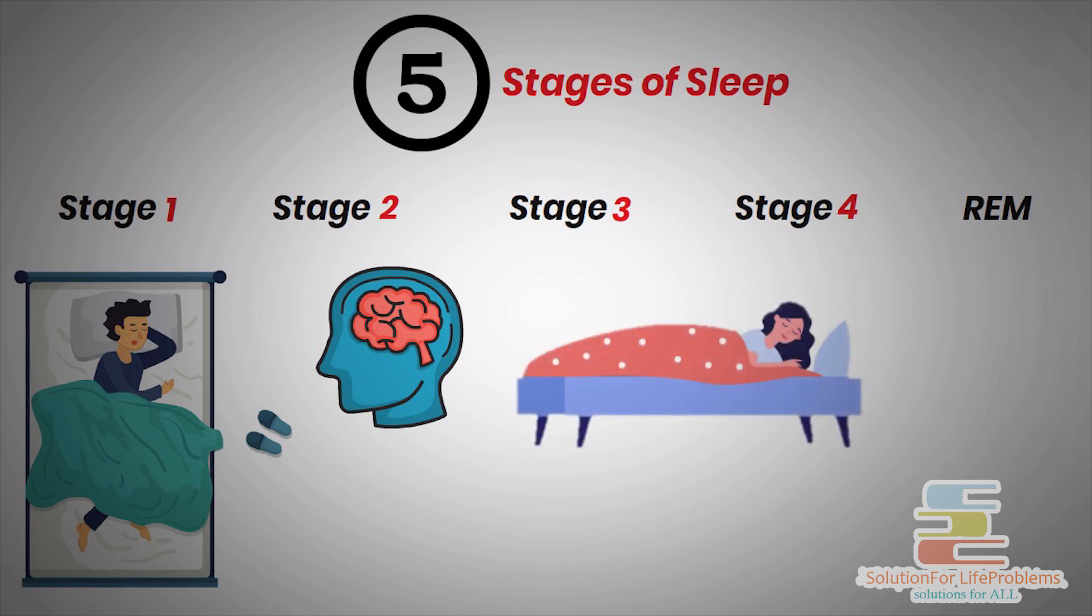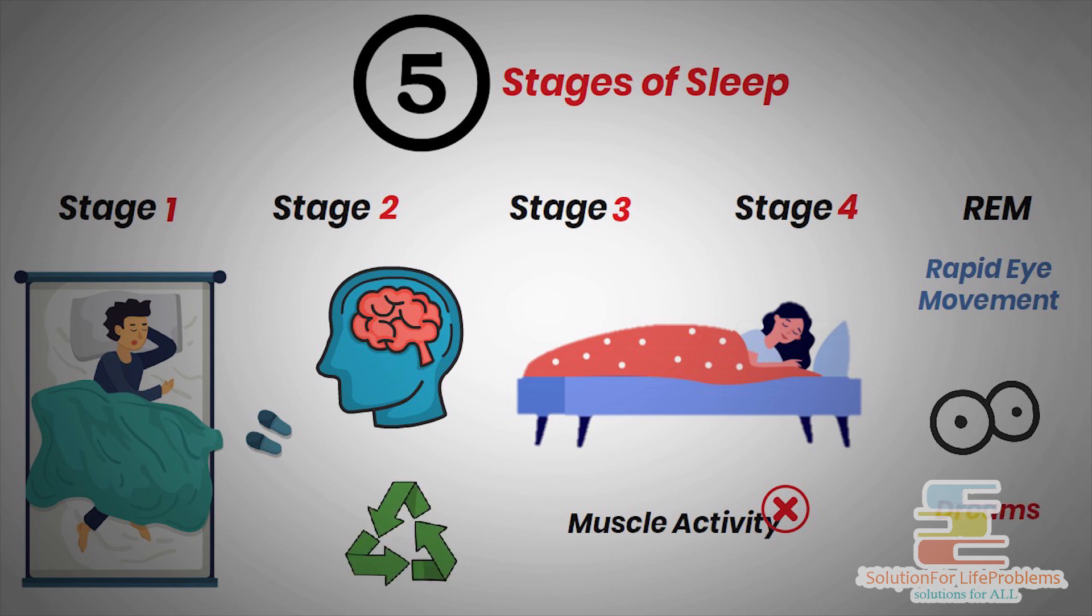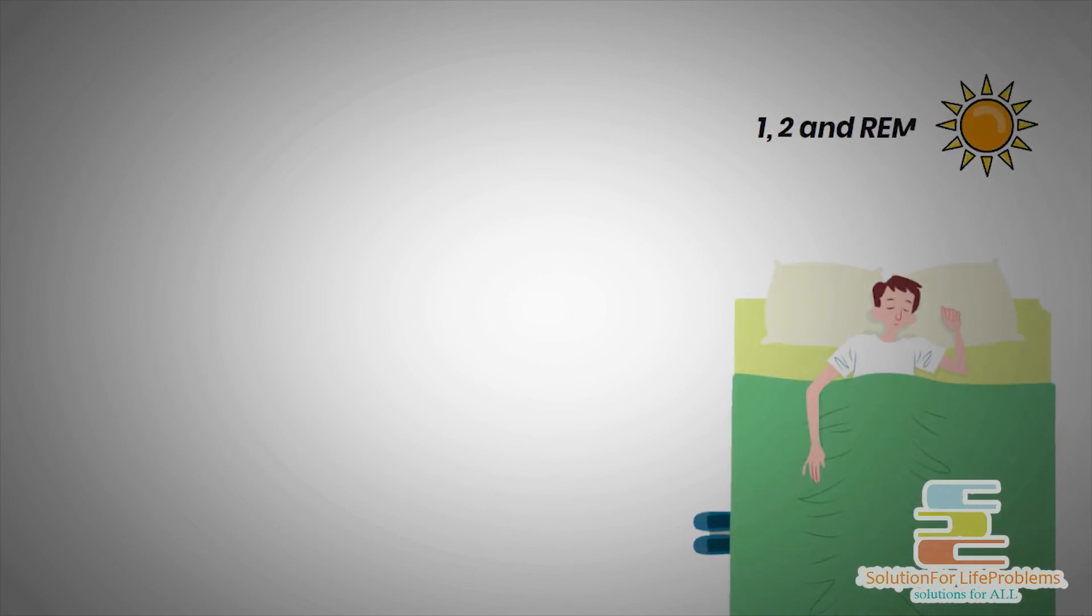Stage 3 and 4 are deep sleep as there is no muscle activity. Rapid eye movement or REM stage is where rapid eye movements take place and we have dreams. The cycle repeats and by morning, people spend nearly all their sleep time in stages 1, 2 and REM.